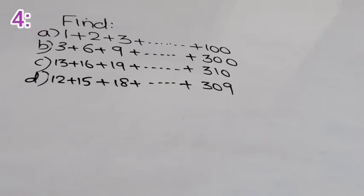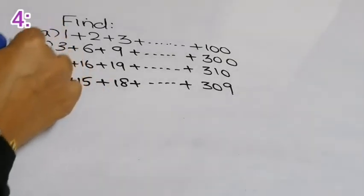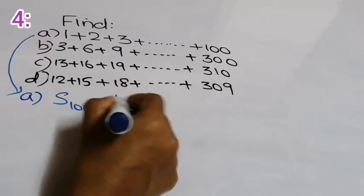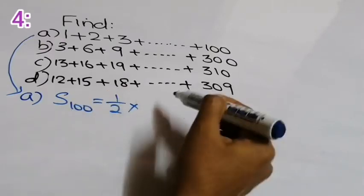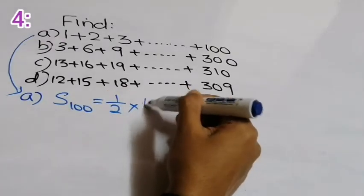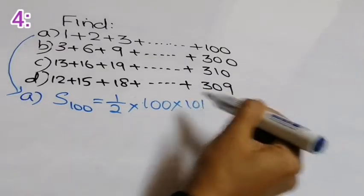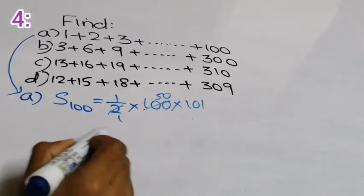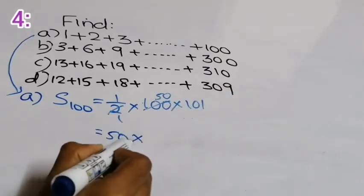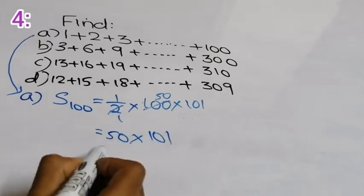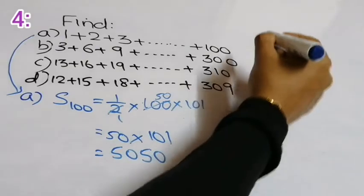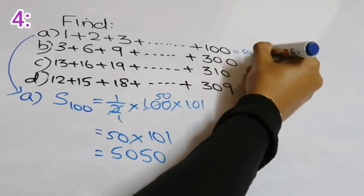Moving on to one more example: 1 plus 2 plus 3 up to 100. These are natural numbers starting from 1, so the sum S of 100 equals one-half into 100 into 101, which gives us 50 into 101 equal to 5,050.